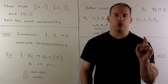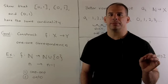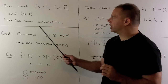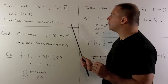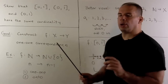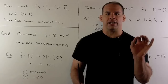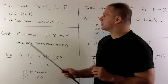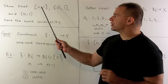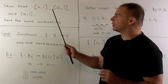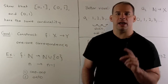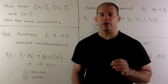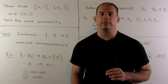The trick here will be shifting. And once we have the solution for this problem, we'll take it to the next step to show that the set of irrationals in the closed interval [0,1] has the same cardinality as the closed interval [0,1].